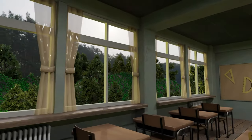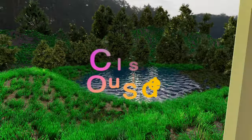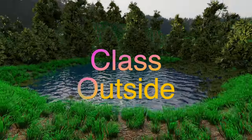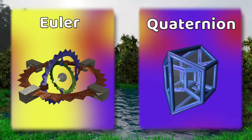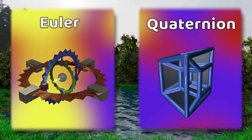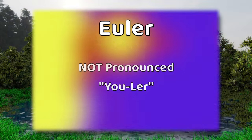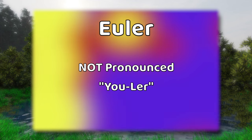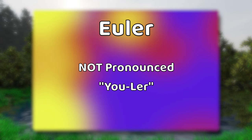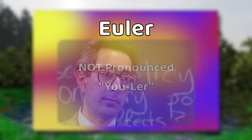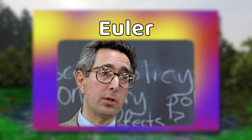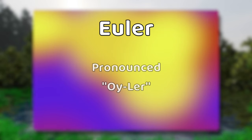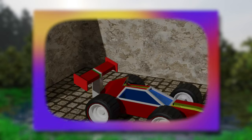It's good to be with you. Welcome to Class Outside. Today, we're going to learn about the difference between Euler and Quaternion values. First thing to know is that Euler is actually not pronounced 'Euler' — it does not rhyme with Bueller. Instead, it's pronounced 'Euler,' and it rhymes with spoiler.